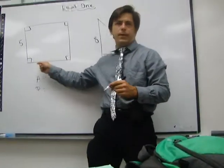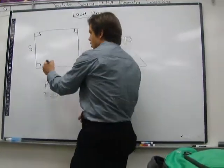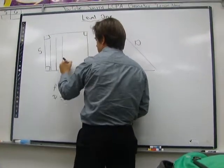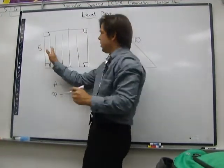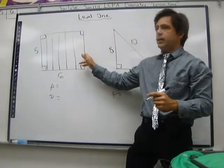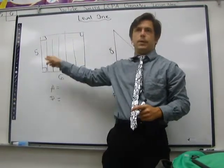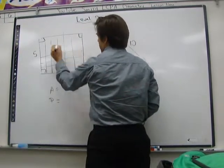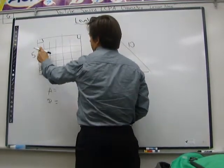So everybody, how long is this side right here? Six. What that means is that it goes like this. There's six bars this way. One, two, three, four, five, six. And how many would there be this way? Five. One, two, three, four, five.